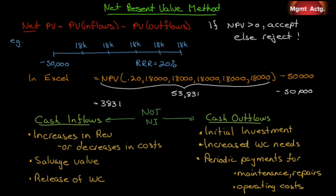I'm going to go through quite a few examples here because we want to make sure that you get it. If we look at the term net present value, we've already figured out what present value is. So all we have to do is figure out what this word in front of it means: net. Net present value equals the present value of all our inflows minus the present value of all our outflows. It's the net cash flow that we're looking at.